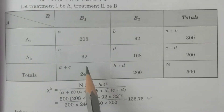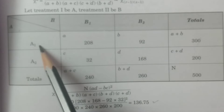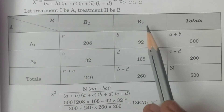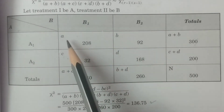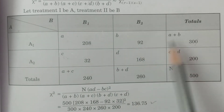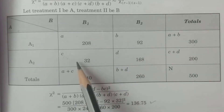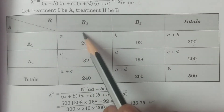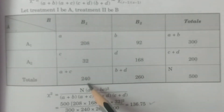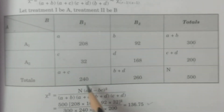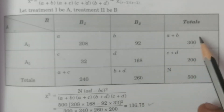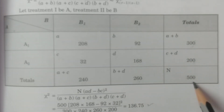The 2x2 contingency table has attributes A1, A2 and B1, B2 with cell frequencies a, b, c, d. Adding row-wise: a+b = 208+92 = 300, and c+d = 200. Adding column-wise: a+c = 240, b+d = 260. The grand total: 300+200 = 500, confirming a+b+c+d = 500.